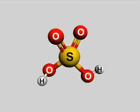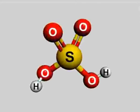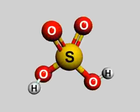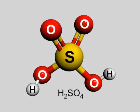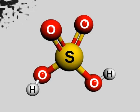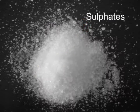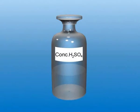Children, have a look at the structure of sulfuric acid on the screen. It is a strong mineral acid with the molecular formula H₂SO₄. Its historical name is oil of vitriol. The salts of sulfuric acid are called sulfates. Sulfuric acid is soluble in water at all concentrations.